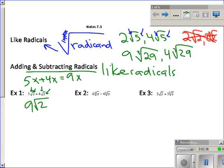In example 2, again I look: Do they have the same index? Yes, they're both cubic, cube root. Do they have the same radicand? Yes, they both have just x to the first power inside. So I can just do the operation and look at the coefficients. 6 - 4 is 2, and then I keep the cube root of x.